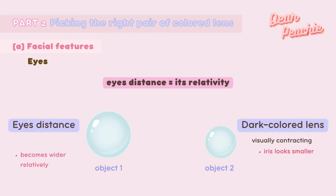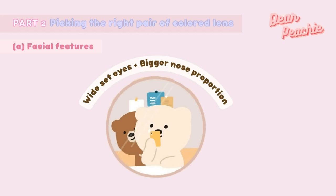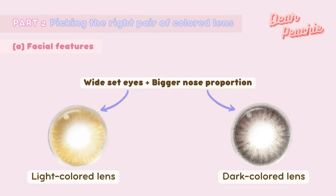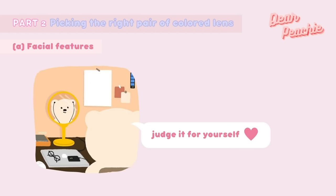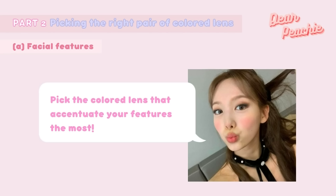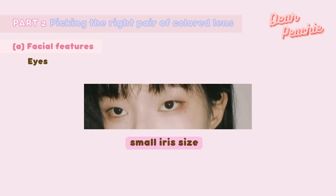But what if you have wide-set eyes and a proportionally bigger nose? One suggests light colored lenses but dark colored lenses suit a wider nose. In this case, you need to judge for yourself — look at your eyes and nose and decide which feature you would like to enhance more. Once you've decided, pick the colored lens that best accentuates that feature.